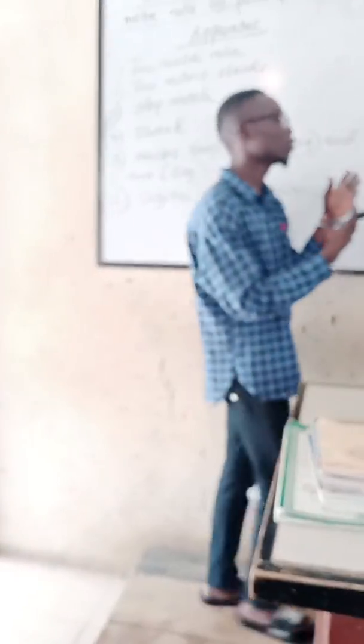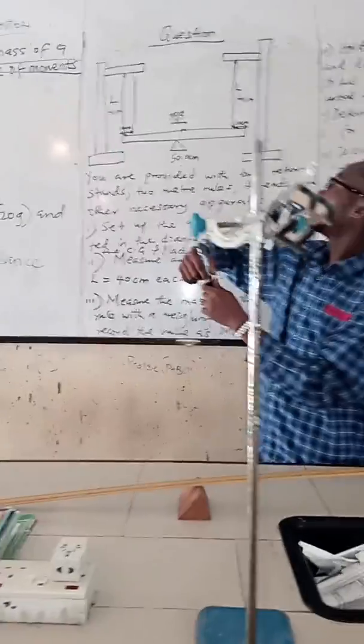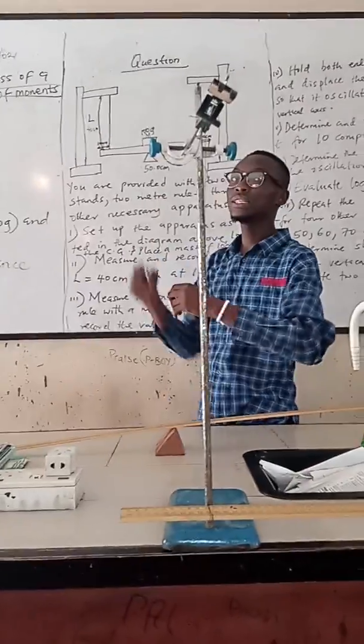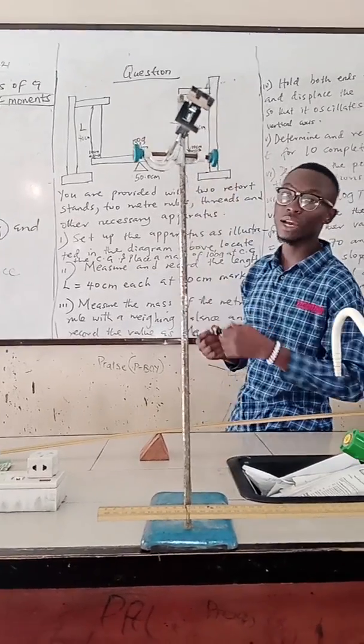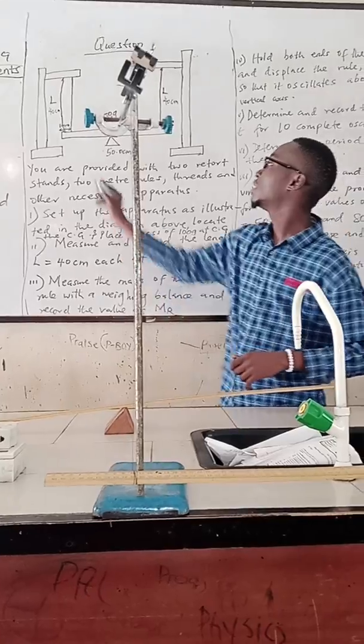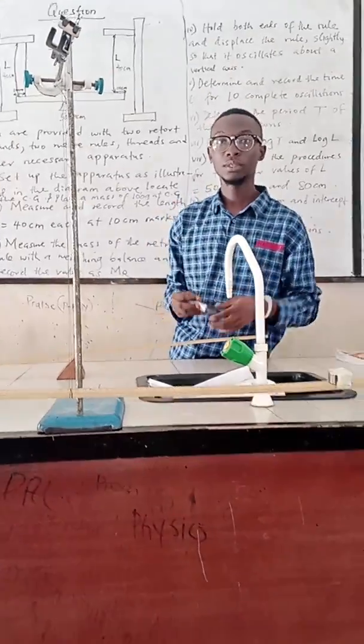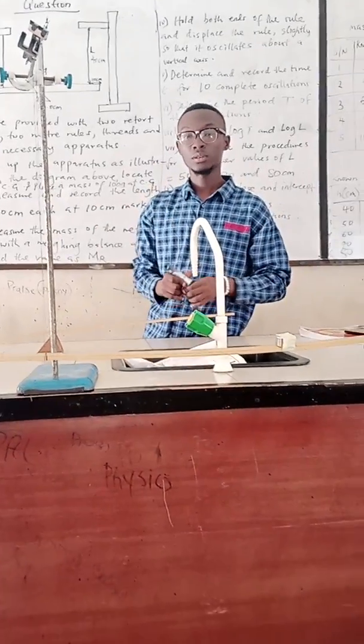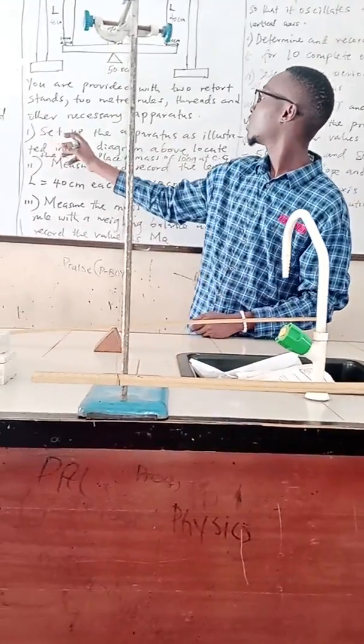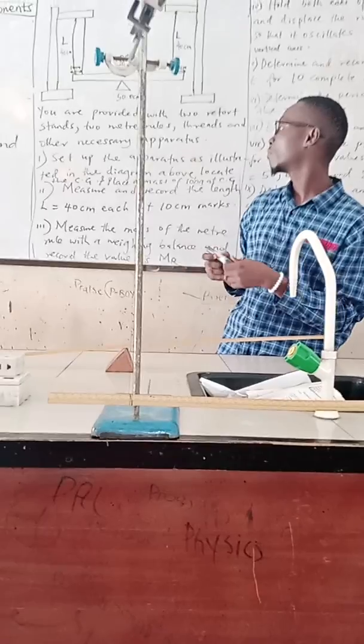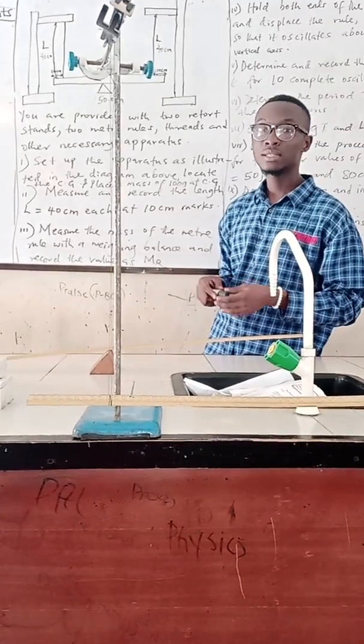From the illustration of the diagram that was given to us, we are told that the length of the thread to this point is 40 cm, and from here also to this point which is held by the thread is also 40 cm. This is the meter rule as shown in the diagram. With some of the apparatus illustrated in the diagram above, we can determine the center of gravity and place a mass of 100 grams at the center of gravity.